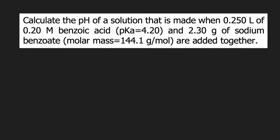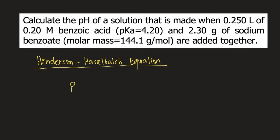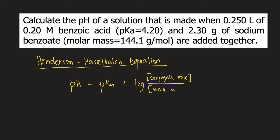When we compute for the pH of a buffer, we will be using the Henderson-Hasselbalch equation. The equation is: pH of a buffer is equal to pKa plus log of the concentration of conjugate base divided by the concentration of the weak acid.